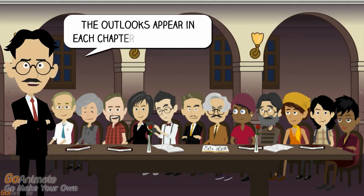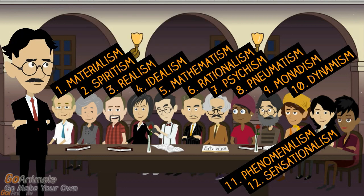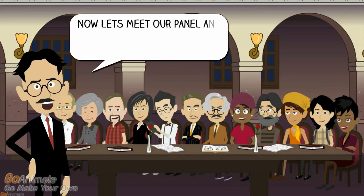The outlooks appear in each chapter in this order: 1. Materialism, 2. Spiritism, 3. Realism, 4. Idealism, 5. Mathematism, 6. Rationalism, 7. Psychism, 8. Pneumatism, 9. Monadism, 10. Dynamism, 11. Phenomenalism, 12. Sensationalism. Now let's meet our panel and learn about the viewpoint that they will be presenting.